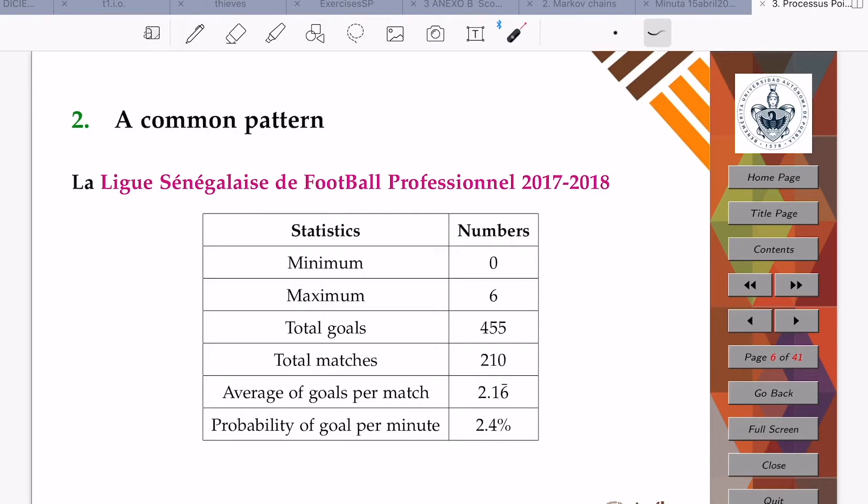What if instead of just asking people what the results will be, we take some statistics? For instance, take the Senegalese League of Football in this season. Here you can see the minimum number of goals during a match, the maximum, the total number of goals, the total number of matches during that season, the average goal per match, and the probability of goal per minute.